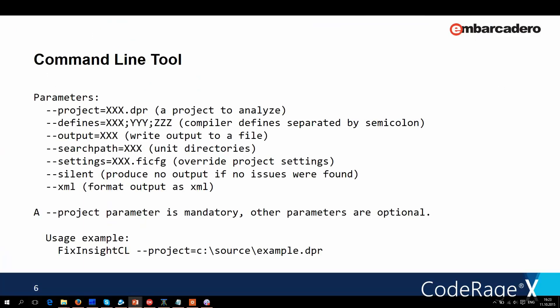Fixinsight can also be run separately as a command-line tool. This makes it easy to integrate into any build process with your favorite continuous integration software like FinalBuilder. It can output its analysis results as plain text or XML.